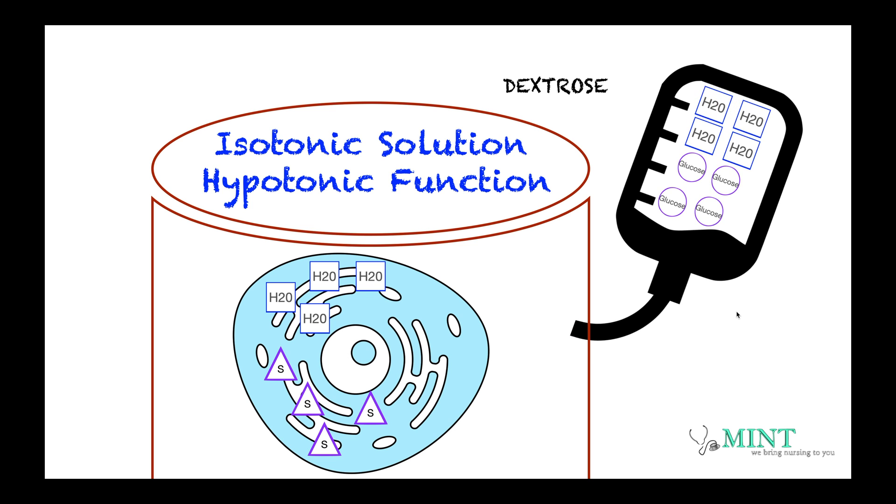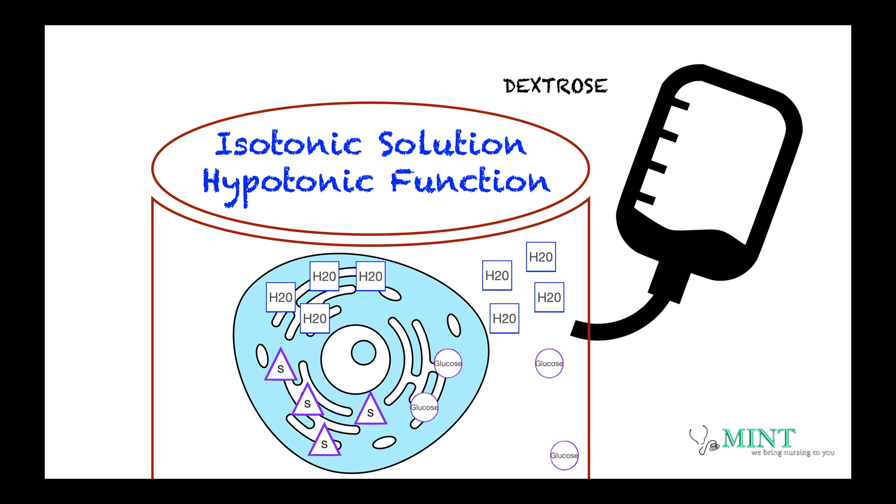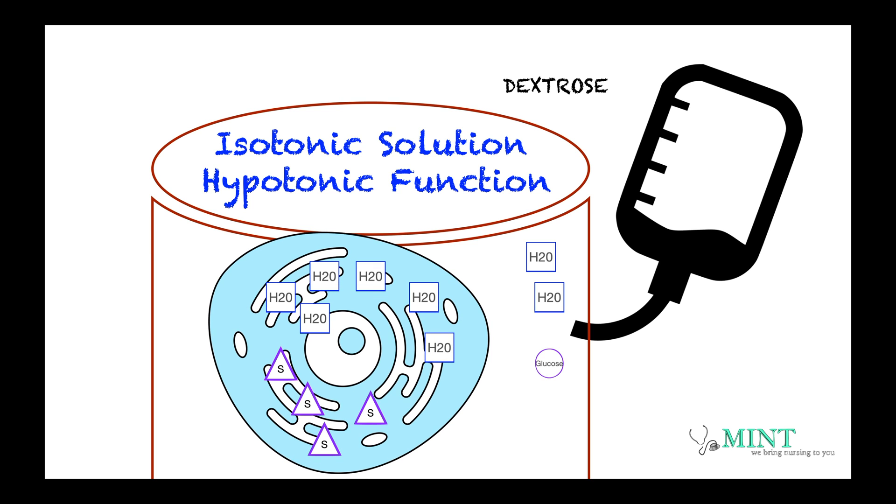So when we inject dextrose in our system, the glucose is used by our body very fast. So what we end up getting is a hypotonic solution, which is a lot of water and not much solute, making the concentration outside the cell less than what's inside. And by the process of osmosis, it shifts fluid from the extracellular space into the intracellular space. So it has the same function of a hypotonic solution where it blows up the cell. It hydrates the cell. The only difference is that outside it's an isotonic, but inside it functions as a hypotonic solution.